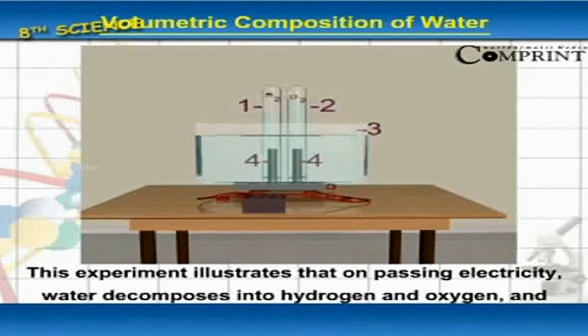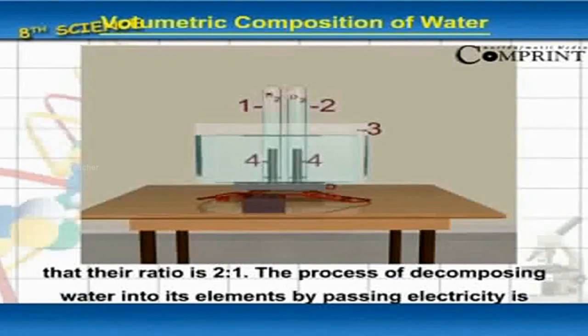This experiment illustrates that on passing electricity, water decomposes into hydrogen and oxygen and that their ratio is 2 is to 1. The process of decomposing water into its elements by passing electricity is called electrolysis of water.